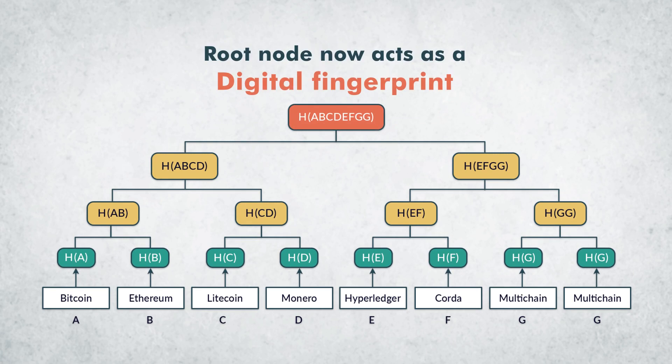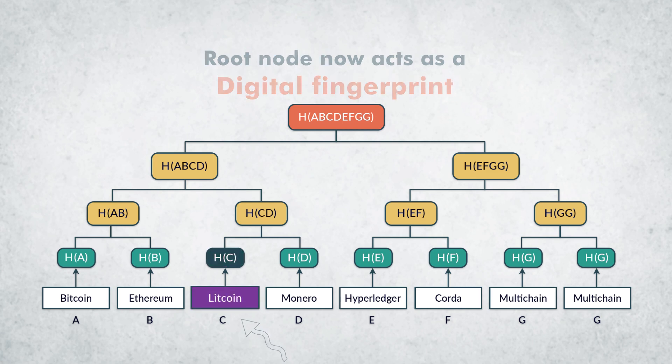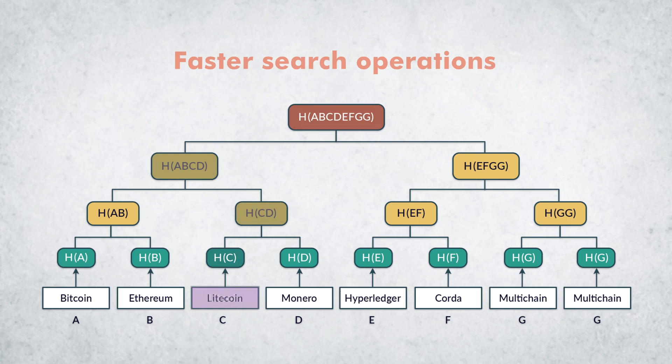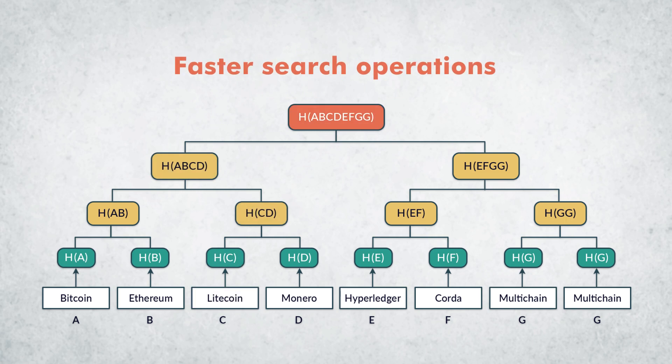The root node now acts as a digital fingerprint of the data set represented by the tree. Even a slight change in the data will change the hash value of the leaf node, ultimately changing the values of all nodes till the root node. Merkle trees allow faster search operations.